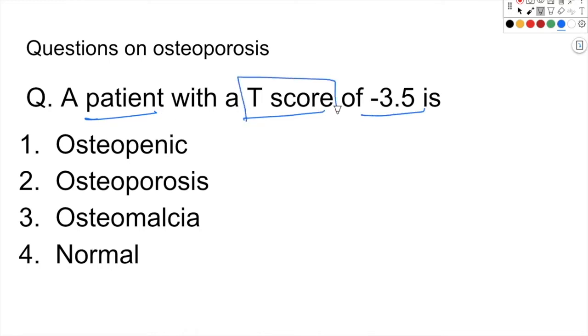T-score according to WHO classification is minus 3.5, which is osteoporosis because it is less than minus 2.5.